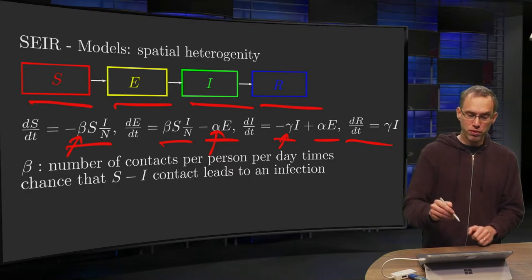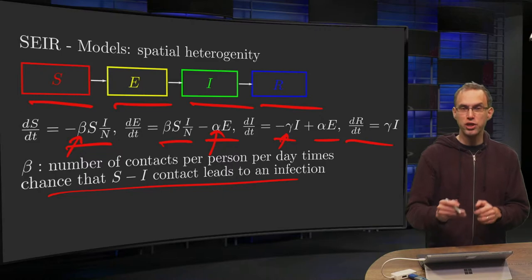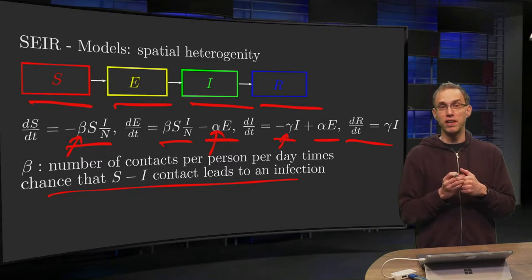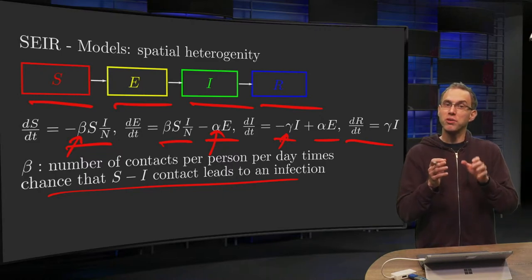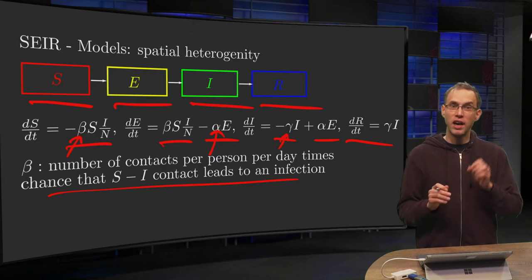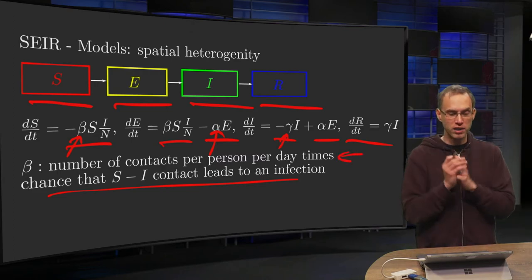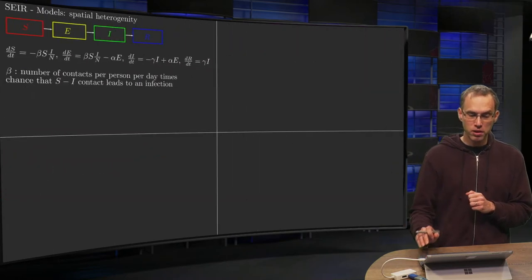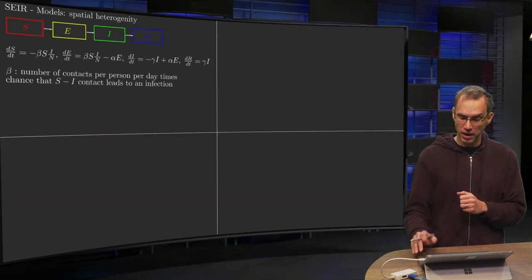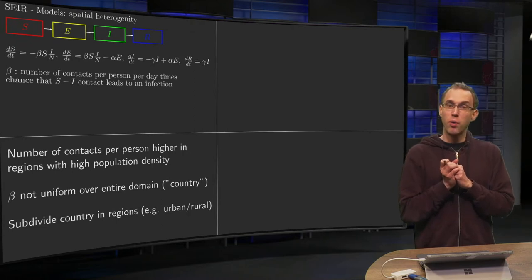Beta is the number of contacts per person per day times the chance that such a contact leads to an infection. So that is the difficult parameter. We will not look into the second part, the chance that such a contact leads to an infection. We sort of consider that constant everywhere in space.